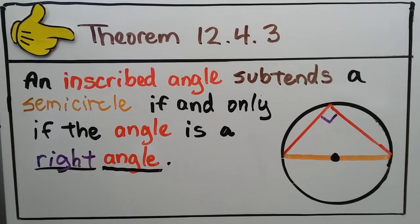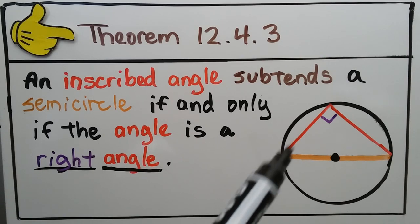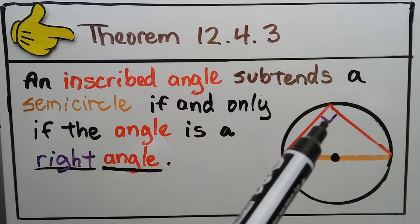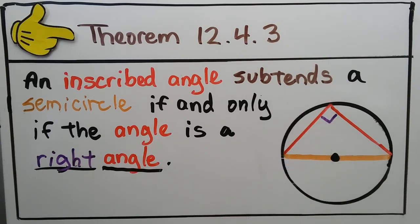Right away for your notes, we have theorem 12.4.3, which says an inscribed angle subtends a semicircle if and only if the angle is a right angle. So we have this red inscribed angle, we can see our right angle mark right here, and if there is a line coming across here, we can see that's a diameter because we have a center point.